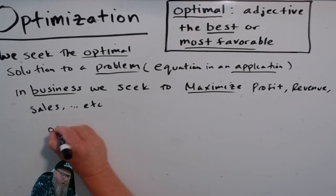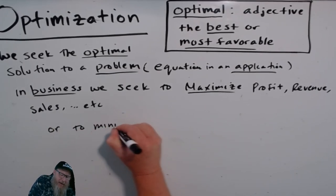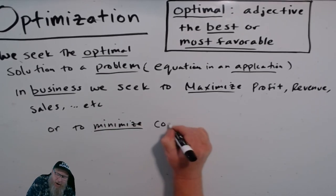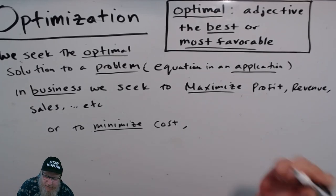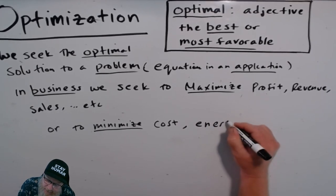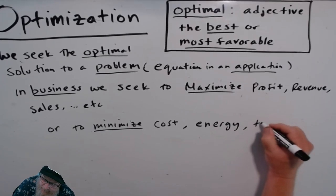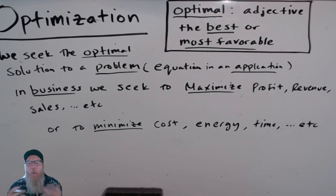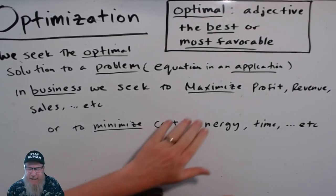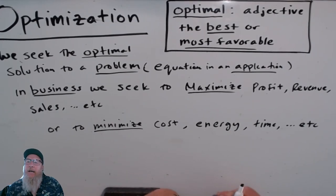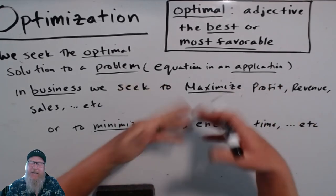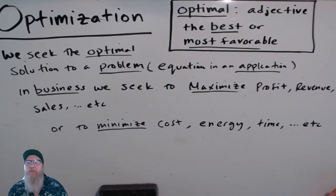Or we might seek to minimize cost, energy, time, etc. Certain quantities in mathematics, especially in business applications, we seek to maximize, and in other areas we seek to minimize them depending on what it is. That's what we would consider the most favorable outcome.